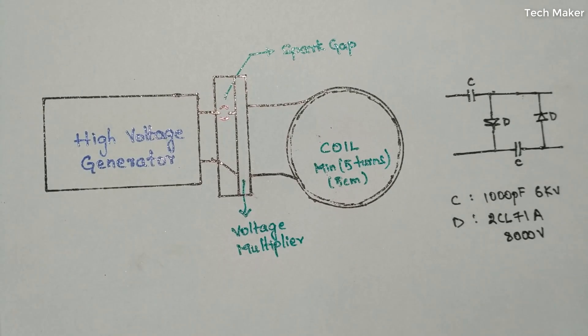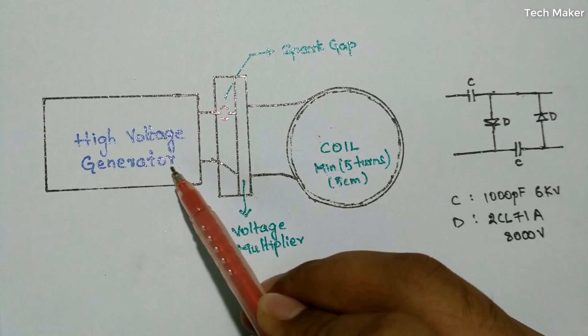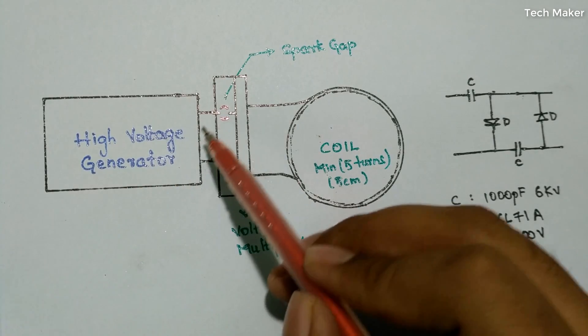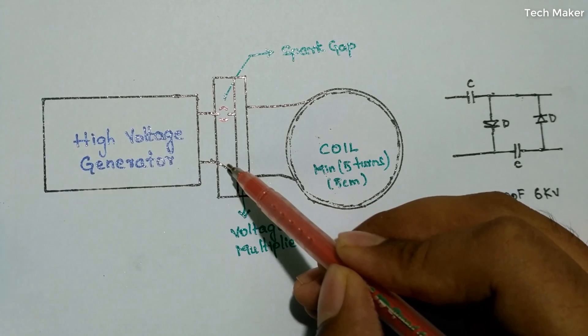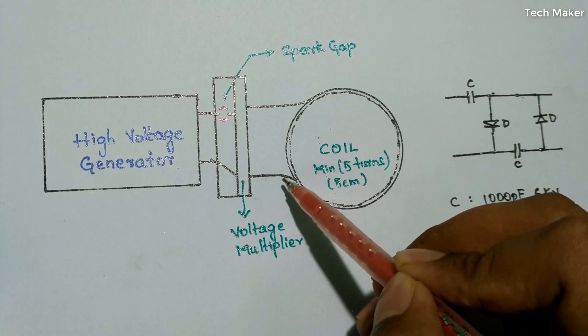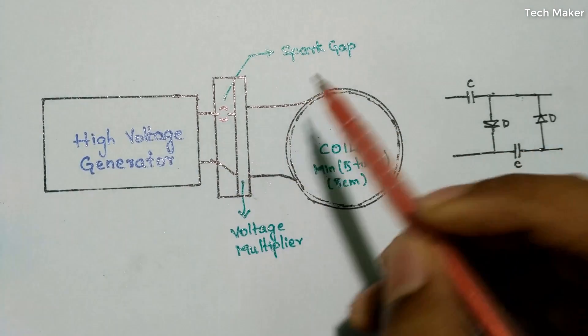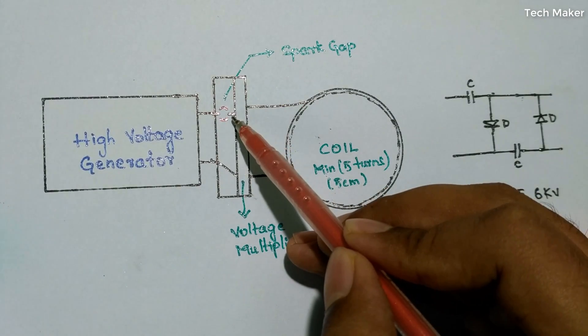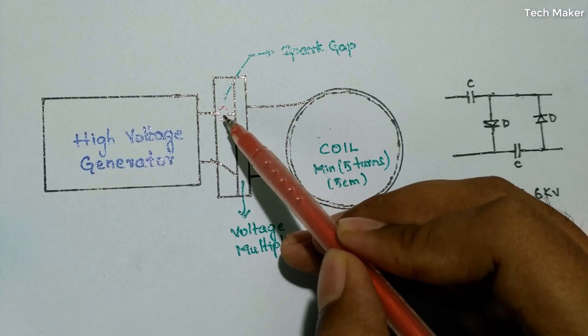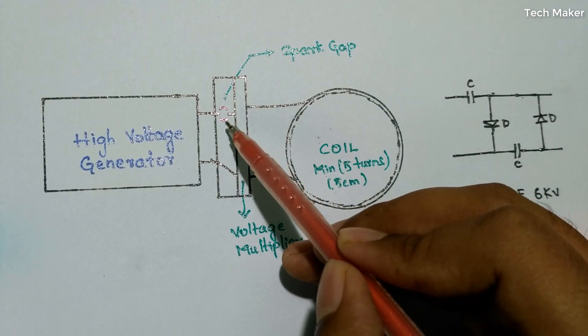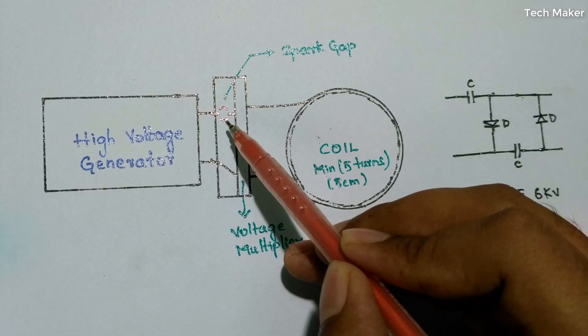First, the operation: this high voltage generator produces the high voltage. One terminal of the high voltage generator is connected to the coil, and another is not connected directly. It is connected with the spark gap.